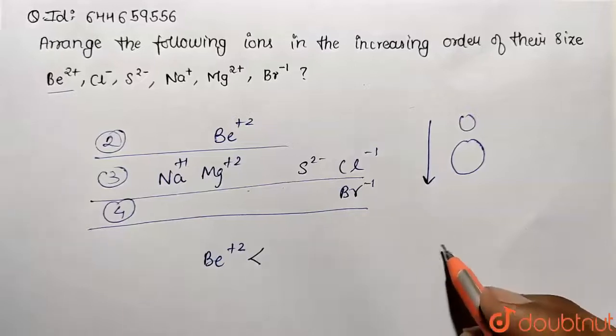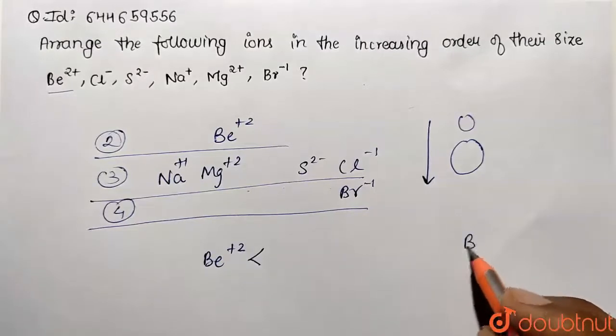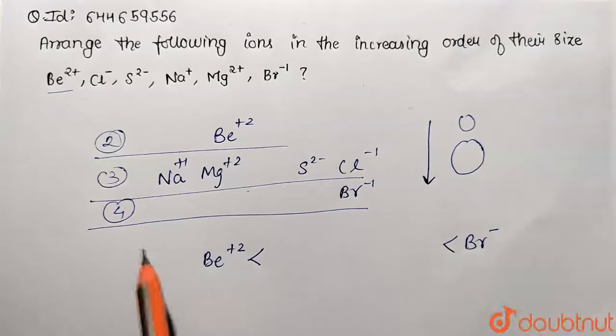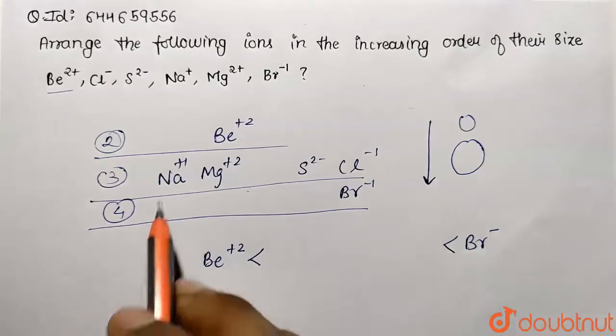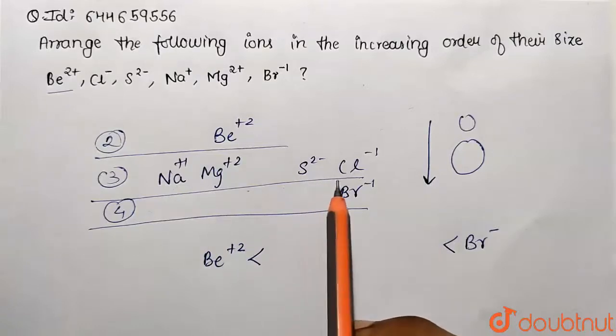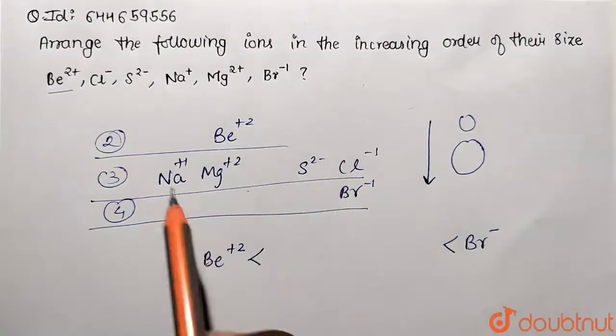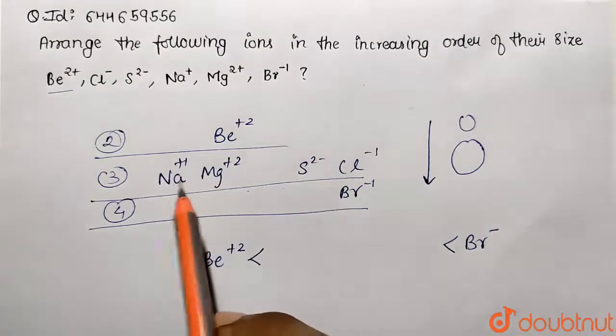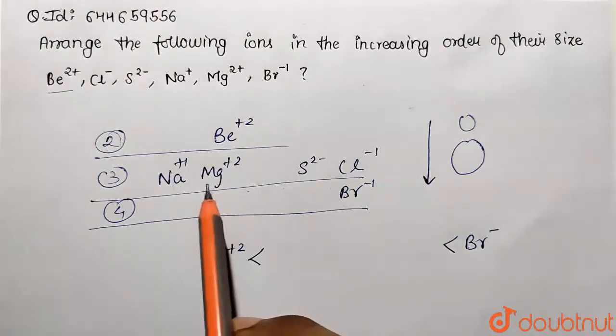Now talk about these species - they are from the third period respectively. We know that size of the anion is going to be larger as compared to the size of the cation. So how many electrons are there and protons - that will be deciding its size.